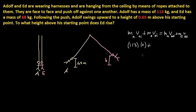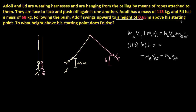So if we subtract mass of Ed times velocity of Ed final from each side, we get: negative mass of Ed times velocity of Ed final equals mass of Adolf times his final velocity. But do we know any of the velocities? No. But what we do know is that Adolf swung upward to a height of 0.65 meters.